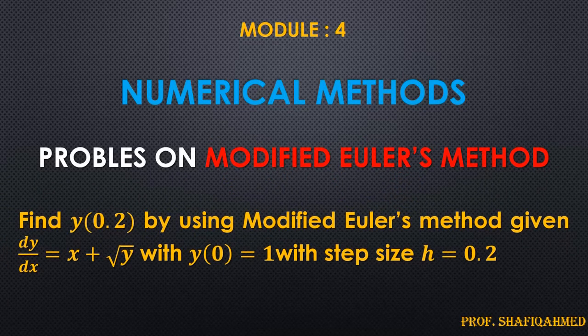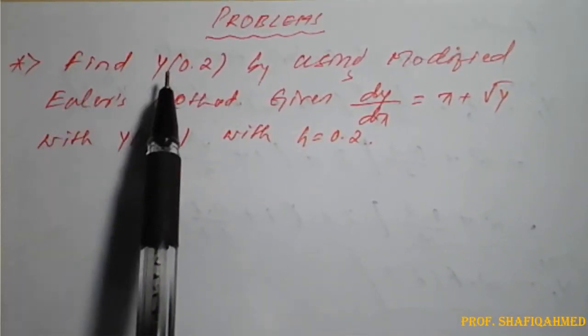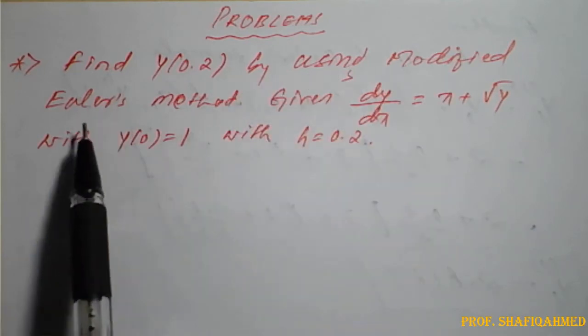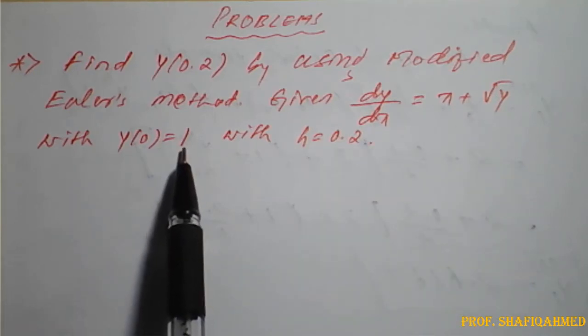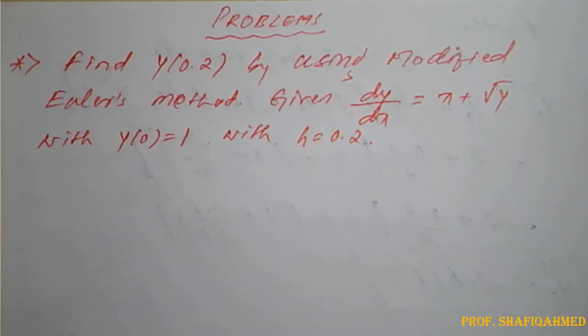Hello students. In today's class we'll see problems on modified Euler's method. The problem is: find y(0.2) by using modified Euler's method, given dy/dx = x + √y, with y(0) = 1 and step size h = 0.2.